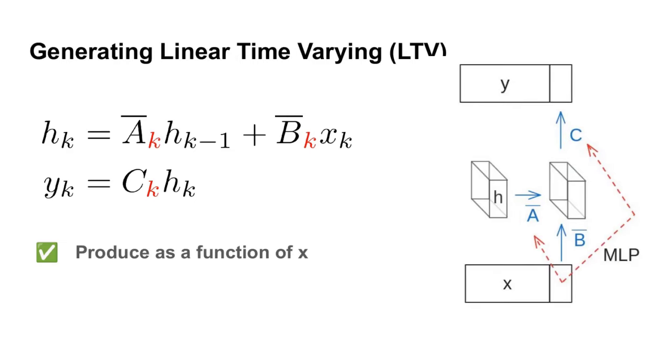But where do these position-specific A, B, and C come from? Well, we're going to construct them just like you would with the Q, K, and V matrices for attention. We're basically just going to take our current position X and use it as a way to produce the A sub-K, B sub-K, and C sub-K value that we need for that position.